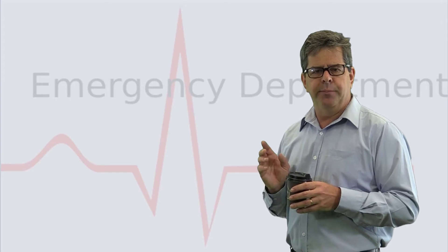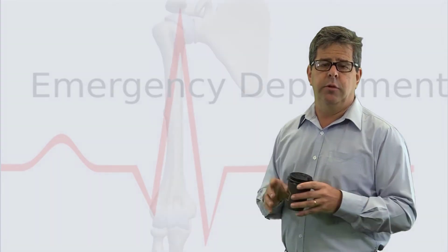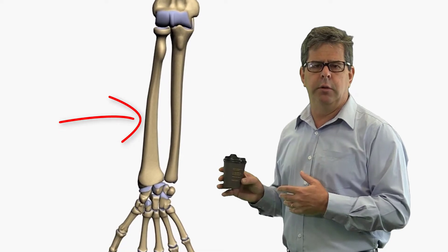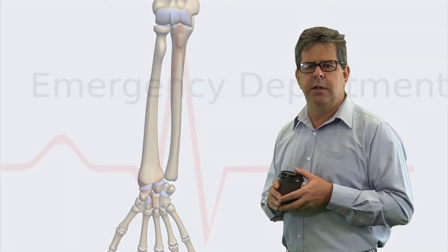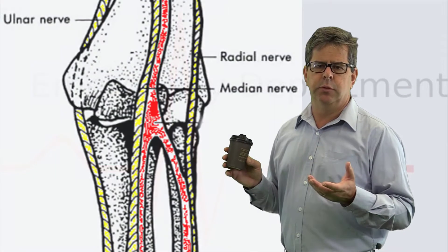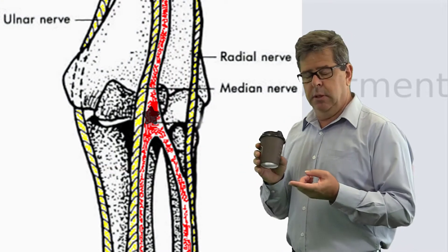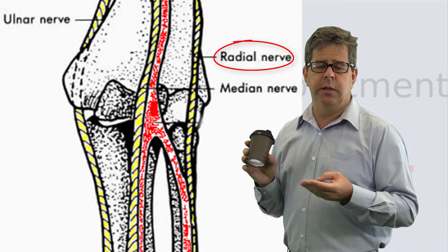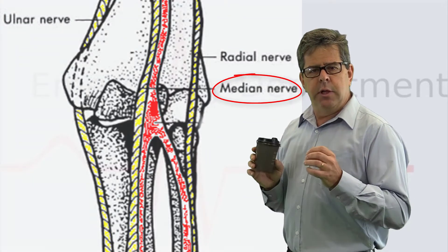Let's briefly revise the anatomy. The bones are the humerus, radius, and ulna. The important vessel going down the middle is the brachial artery, and there's the ulnar nerve, radial nerve, and median nerve.